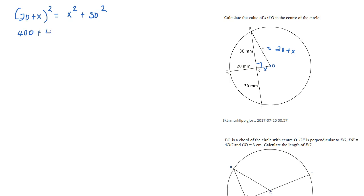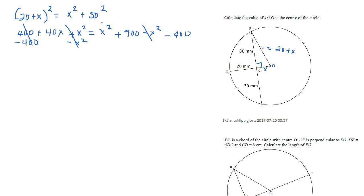Expanding: 400 plus 40x plus x squared is equal to x squared plus 900. Subtracting x squared and 400 from both sides, those terms become 0, and I have 40x is equal to 500. Dividing both sides by 40, we get 50 divided by 4, which is 12.5.